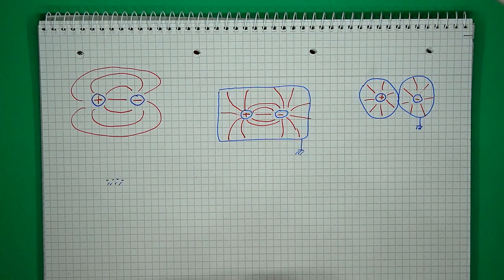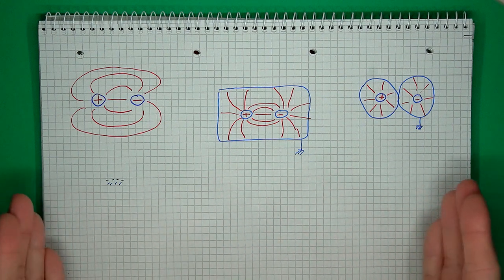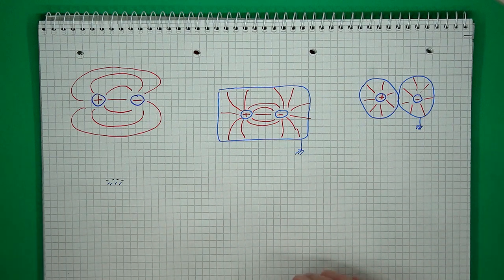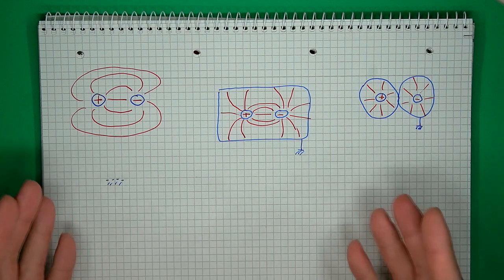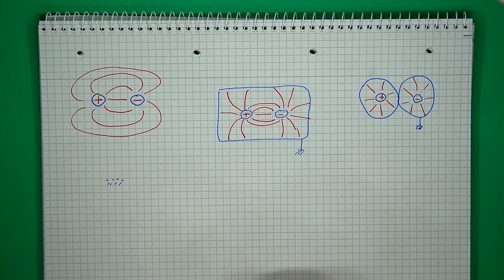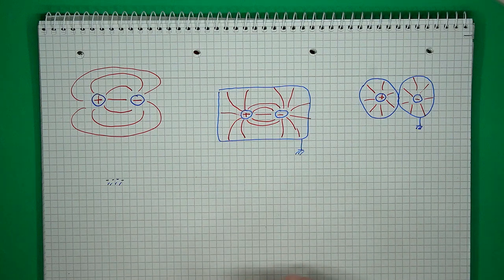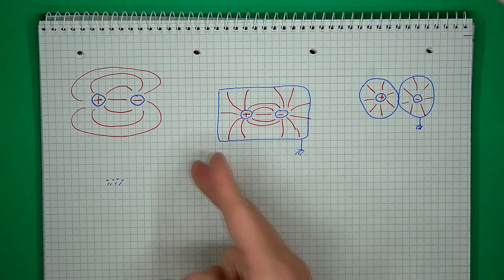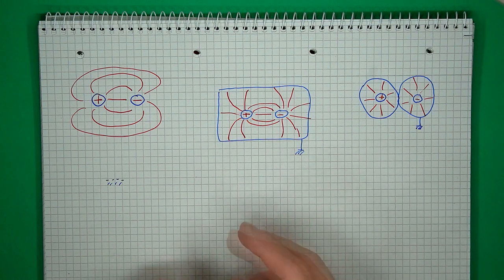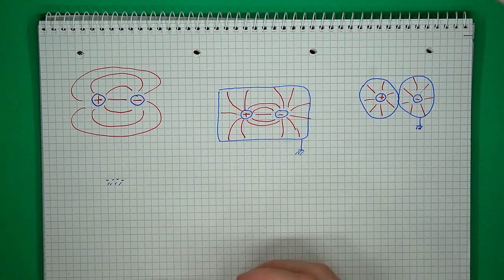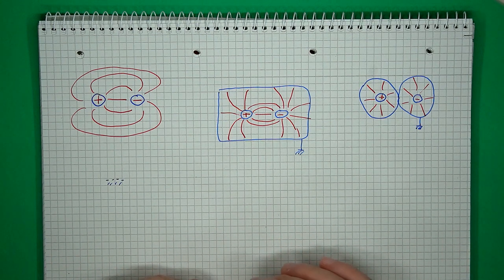From a differential impedance point of view, all three of these structures can be built to have exactly the same impedance — say 100 ohms. But the tricky part is creating an accurate model that captures not just the differential impedance, but also the impedance in reference to ground. The other impedance to consider when looking at these structures is the common mode impedance.